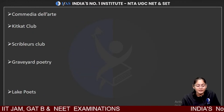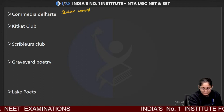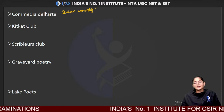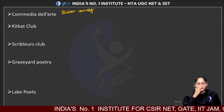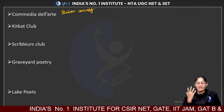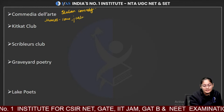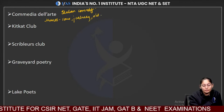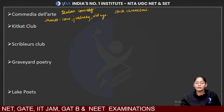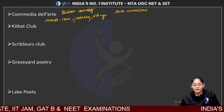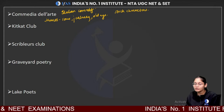Commedia dell'arte is also called Italian comedy. There were character troupes who used to travel to different cities and perform. Their major themes were love, jealousy, and old age. They made use of stock characters and always had happy endings. This form became very famous in England from around the 16th to 18th century.